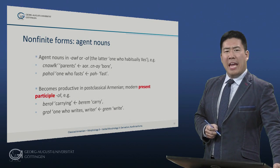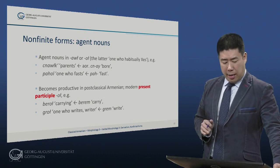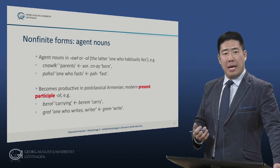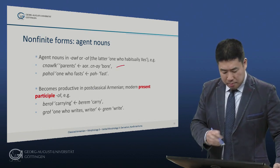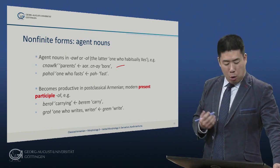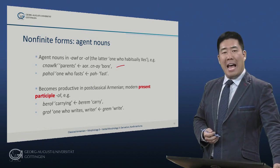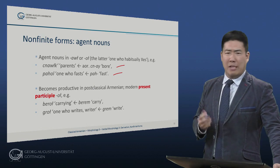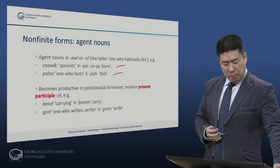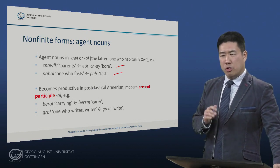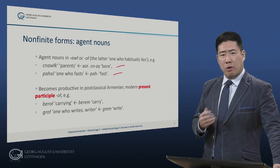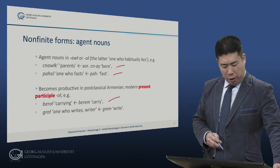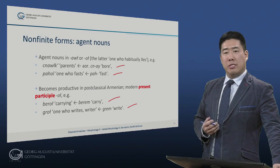Finally, there are a couple of agent noun formations, but these do not become productive until post-classical times. There are agent nouns in -awl or -ol with a uvularized l. Some mean 'one who habitually does X': tsnauk from tsnai 'bore or gave birth,' so 'the ones who give birth' — tsnauk means 'parents.' And pahol 'one who fasts,' from pahem 'I fast' — with the connotation of one who habitually fasts, not just once but repeatedly. This becomes productive in post-classical Armenian and is the source of the modern present participle in -og. So to berem 'carry,' berog 'carrying'; to gerem 'write,' gerog 'one who writes habitually,' in other words a writer.